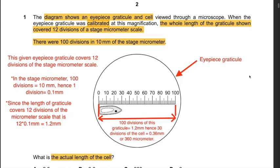Question 1: The diagram shows an eyepiece graticule and cell viewed through a microscope. When the eyepiece graticule was calibrated at this magnification, the whole length of the graticule shown covered 12 divisions of a stage micrometer scale. There were 100 divisions in 10 millimeters of the stage micrometer. In the stage micrometer, 100 divisions equals 10 mm, hence one division equals 0.1 mm.